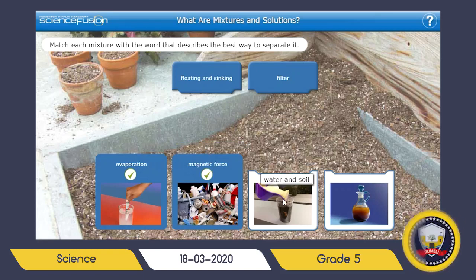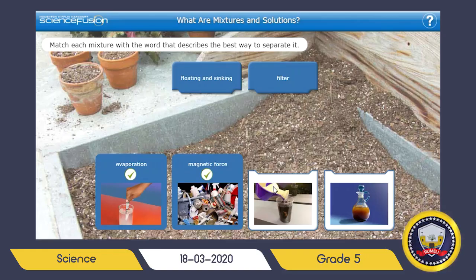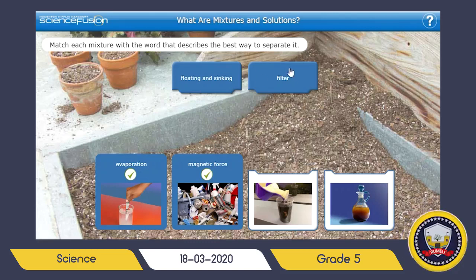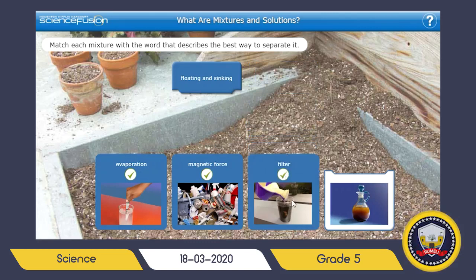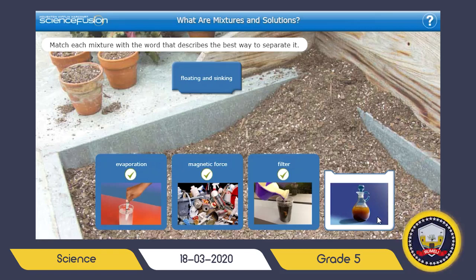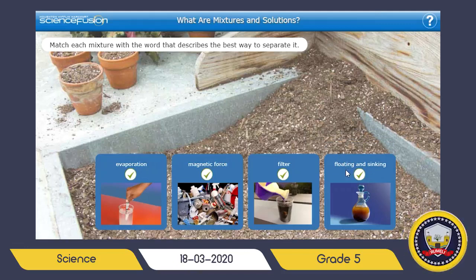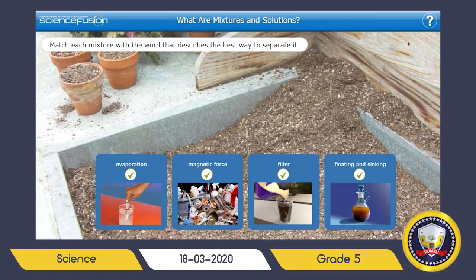For water and soil — do you remember any example related to water and soil that we discussed? Perfect — filtration. We can use filter paper to separate water and soil. For salad dressing, it is a mixture of lemon juice, oil, and other spices which have different densities. So we can use the density factor — which can also be considered as floating and sinking — to separate the salad dressing.